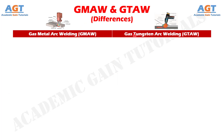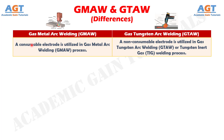Difference number one: a consumable electrode is utilized in the gas metal arc welding process, whereas a non-consumable electrode is utilized in the gas tungsten arc welding, or tungsten inert gas welding, process.